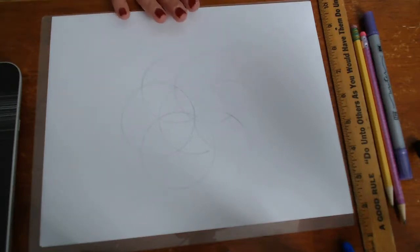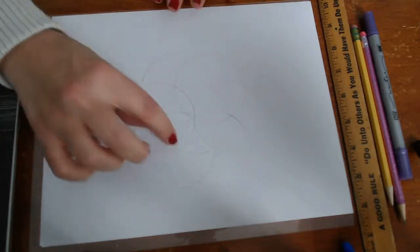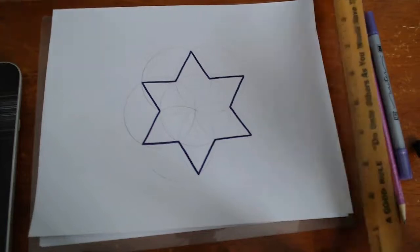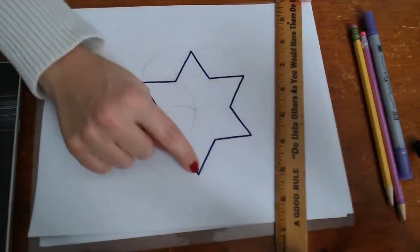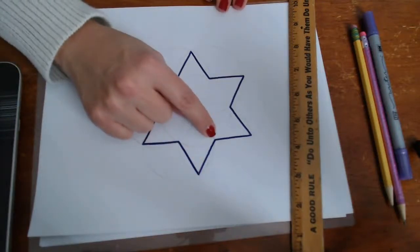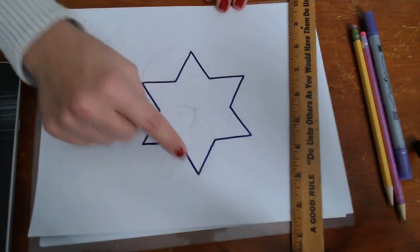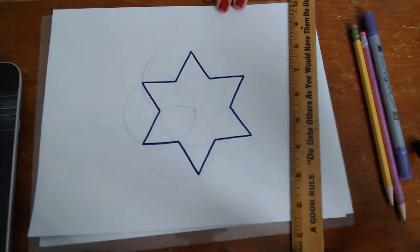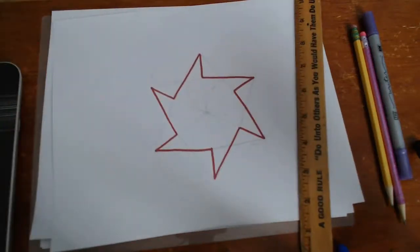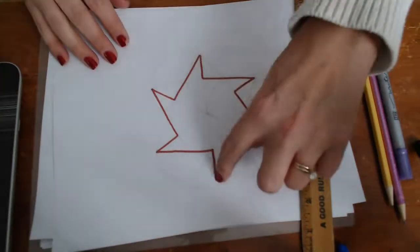But once we do this, what I have them do is create different shapes based on where these intersections are or creating their own intersections. So for example, I took my straight edge and I connected the intersection here and the intersection along the original circle. And so I just did that all the way around. I was able to get this star.